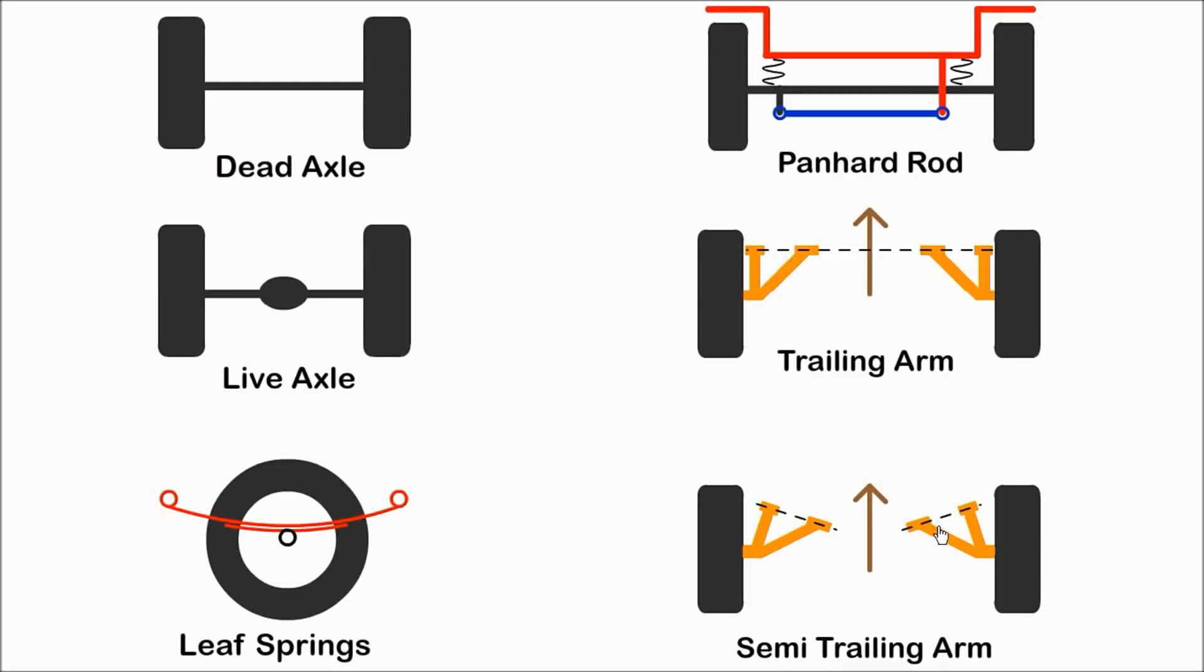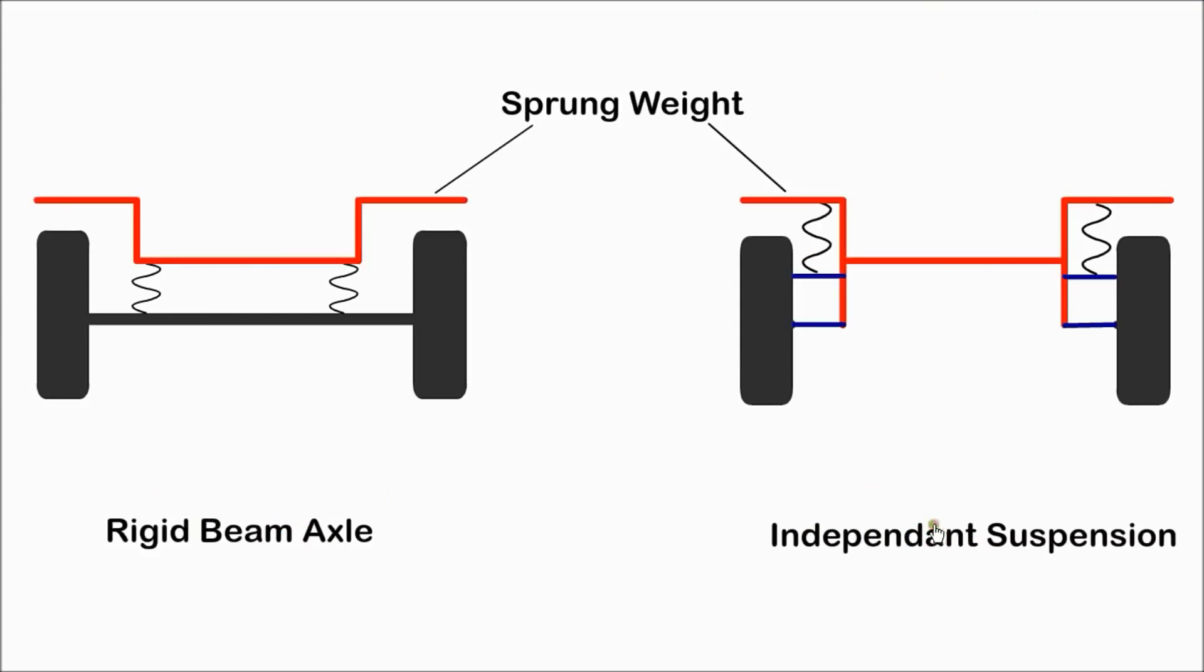Unsprung mass or unsprung weight is the mass of suspension components attached to the wheels. Ideally, the unsprung mass should be as small as possible compared to the sprung vertical mass. A dead axle or rigid beam axle uses a single piece of metal sprung beneath the vehicle which the wheels are attached to. It has high unsprung weight. Also, the up and down movement of one wheel will also affect the other side, reducing comfort for the occupants.